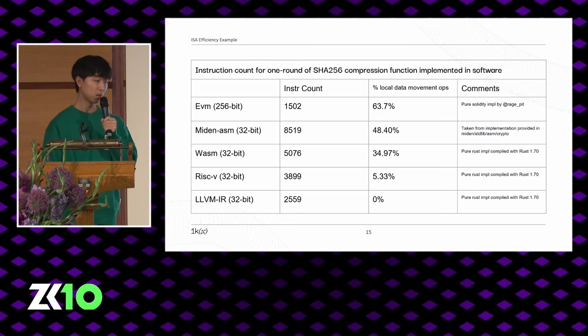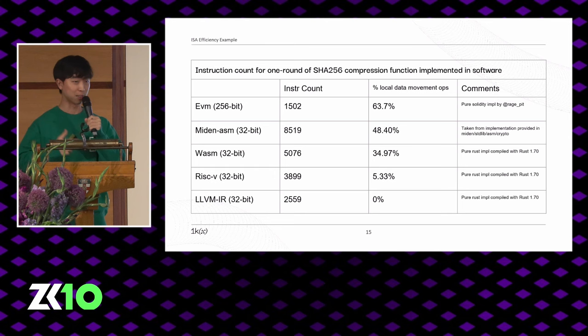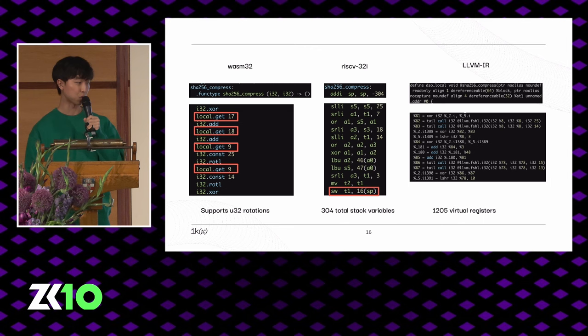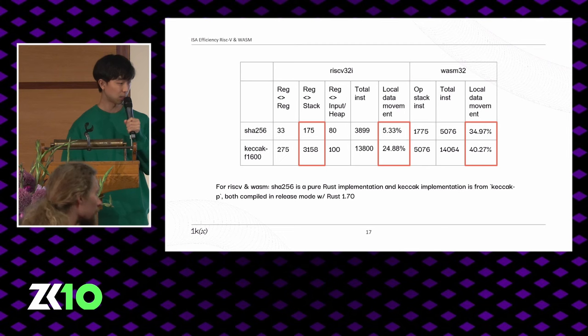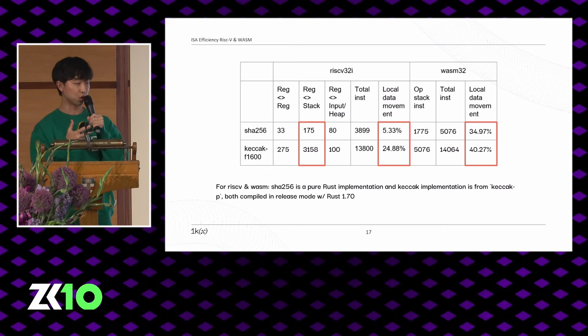Looking at actual instruction counts, we took one round of SHA-256 compression and compiled it across different ISAs. The first three stack-based machines have significantly larger local data movement operations compared to RISC-V or LLVM IR, which has virtual registers and therefore zero percent local data movement operations. Comparing RISC-V and WASM across SHA-256 and Keccak, there are significantly fewer data movement operations in RISC-V compared to WASM, though for Keccak, RISC-V also incurs more data movement due to maintaining more internal state.